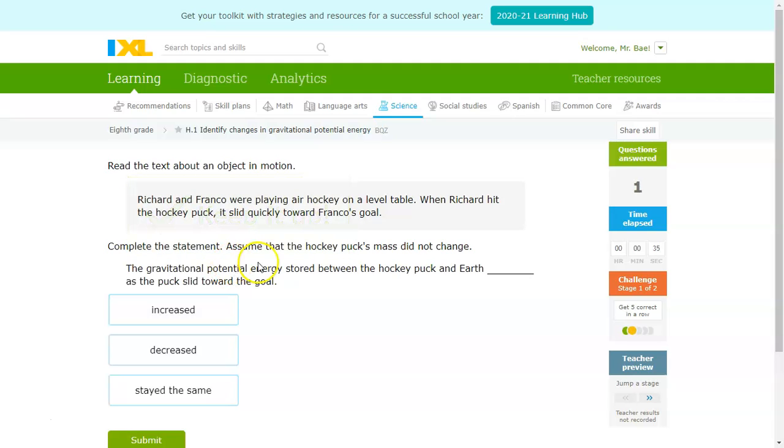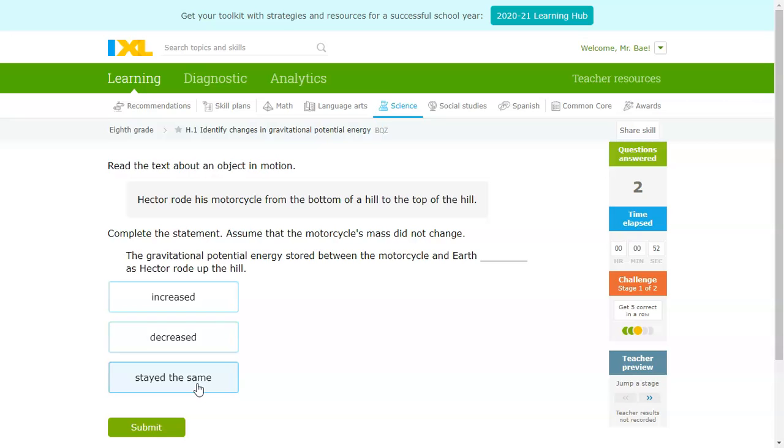Next one, the gravitational potential energy stored between the hockey puck and Earth blank as the puck slid toward the goal. So, if it's on a flat surface, that's what I would assume. Since it's on a level table, the potential energy stayed the same because the distance between it and the Earth is staying constant.